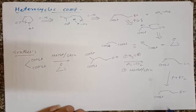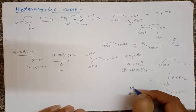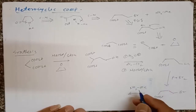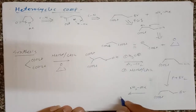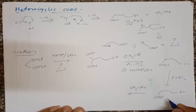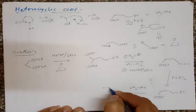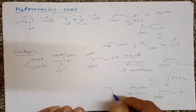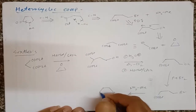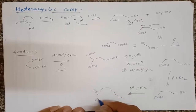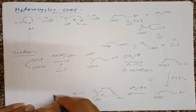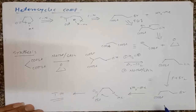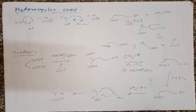Now we can treat this compound with methylamine, NH₂Me. The amine will attack either on this ester group or on the other group. Suppose it attacks on this group; it gives formation of an N-methyl ester. And in the second step, it undergoes cyclization and gives formation of the original target molecule. So in this way we can prepare a good synthetic route for the synthesis of such a heterocyclic compound.